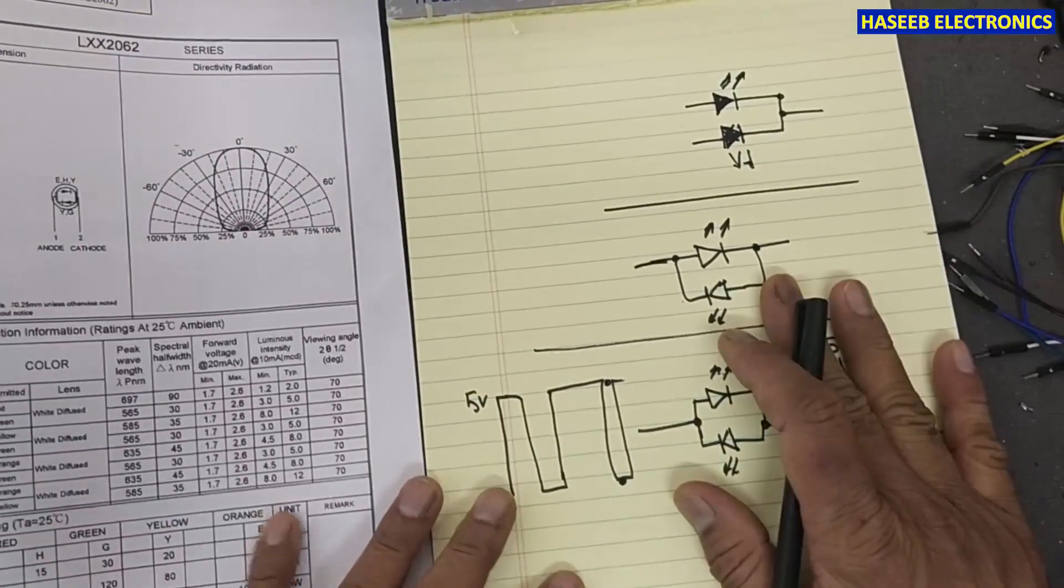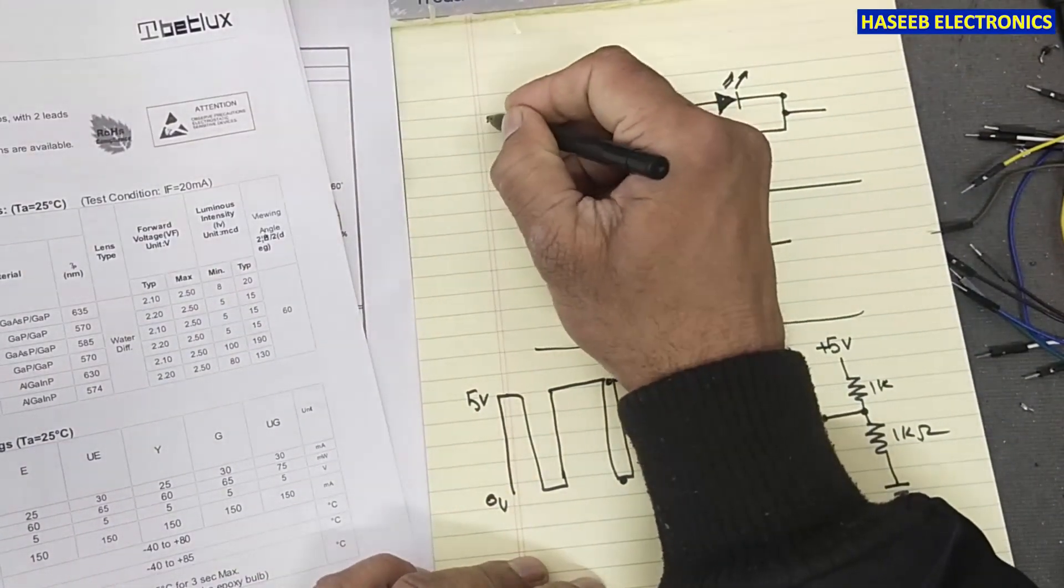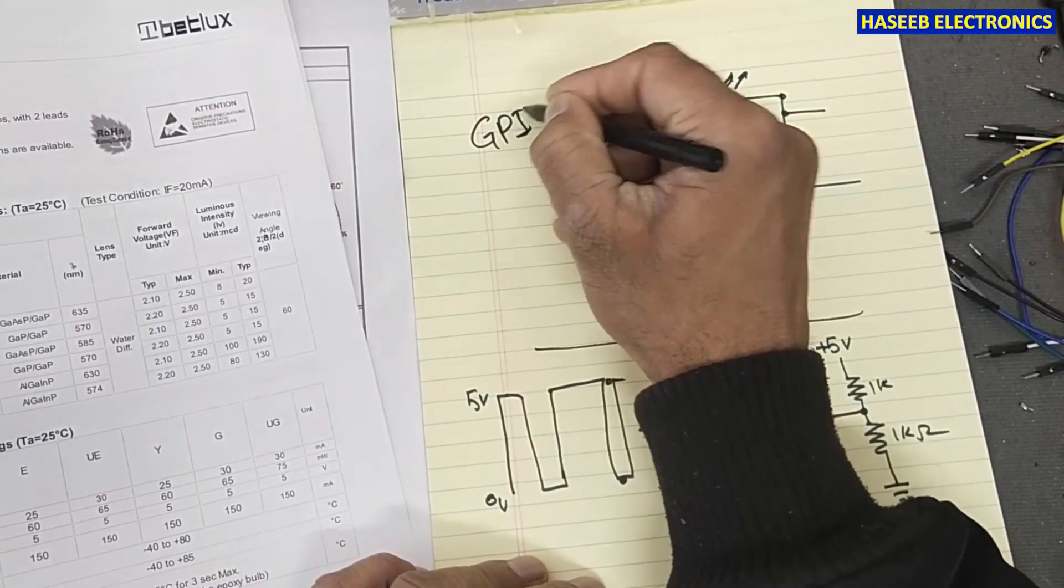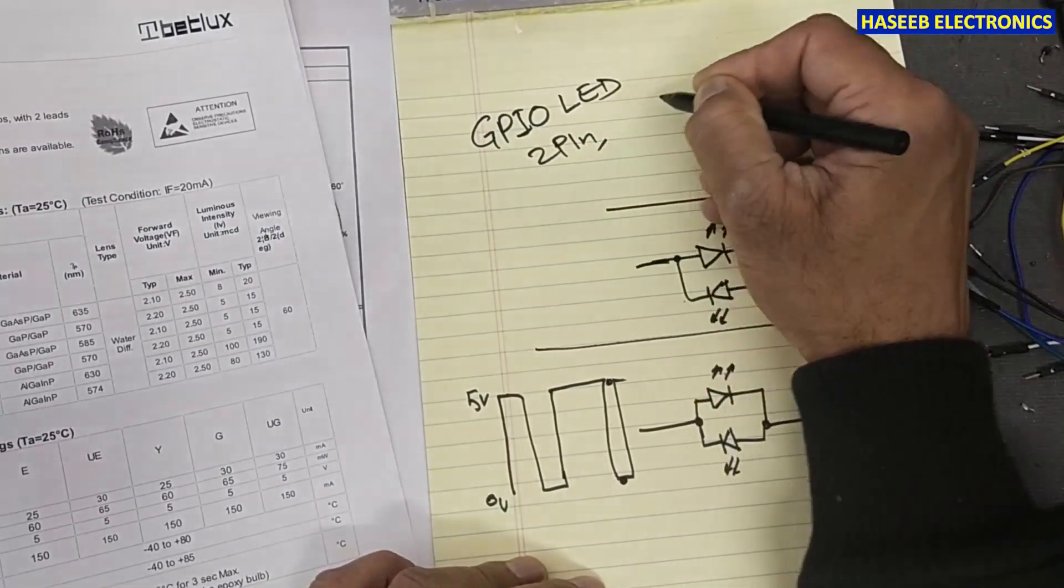So this is the working concept of this bi-color two-pin LED. It is called GPIO LED, two-pin or two-lead.